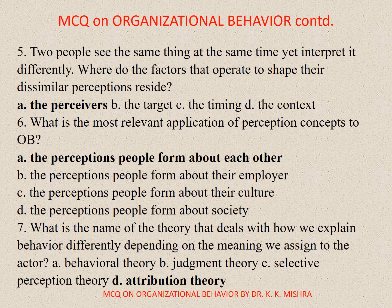Question 5. Two people see the same thing at the same time yet interpret it differently. Where do the factors that operate to shape their dissimilar perceptions reside? A. The perceivers, B. The target, C. The timing, D. The context. Correct option is A. The perceivers.